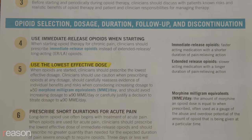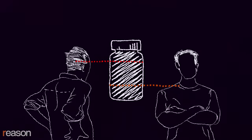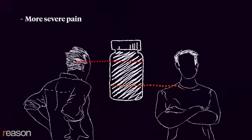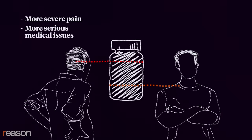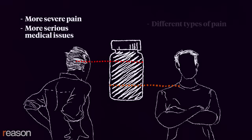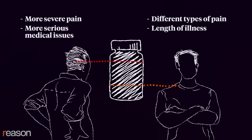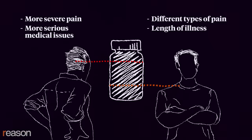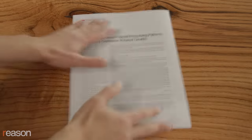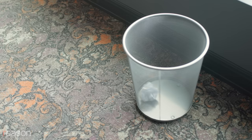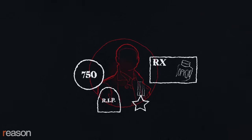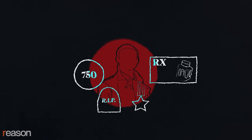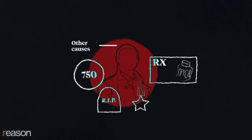The problem with this study is that the high-dose and low-dose patients differed in many ways. In particular, the high-dose patients presumably had more severe pain and more serious medical issues. They may have also differed in the type of pain they endured or the length of time they suffered. Controls have to match subjects as closely as possible. This study did not meet that basic requirement of good science. It is plausible that the 750 patients who overdosed did so for reasons other than the amount of opioids they were prescribed — reasons the study didn't control for.